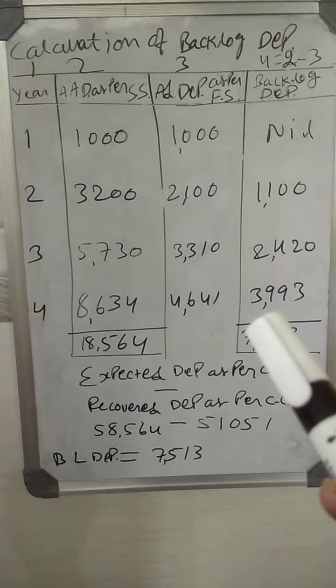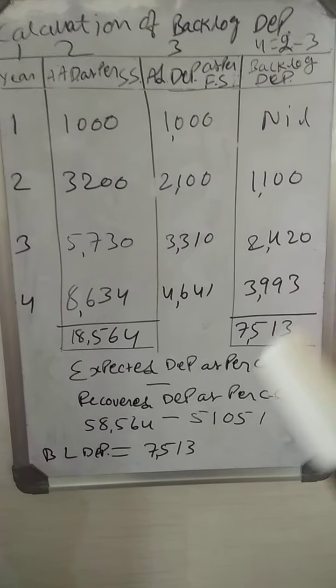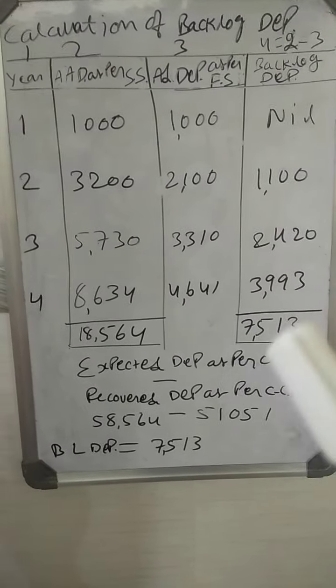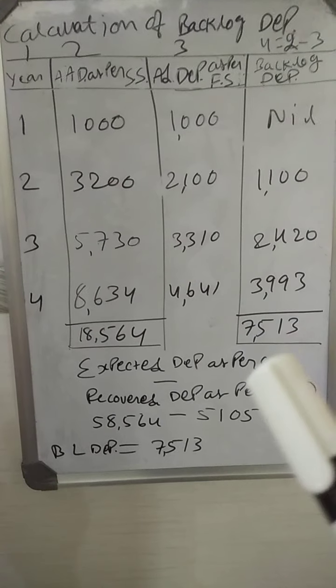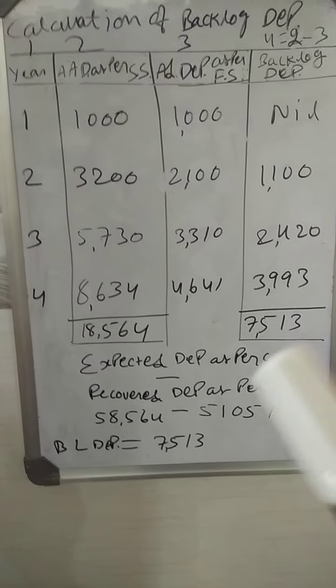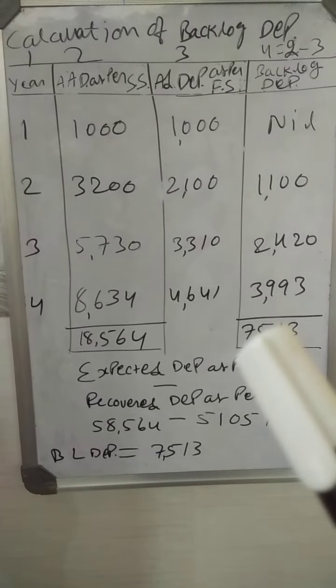So this is the backlog depreciation for each year. The total backlog depreciation comes to 7,513.